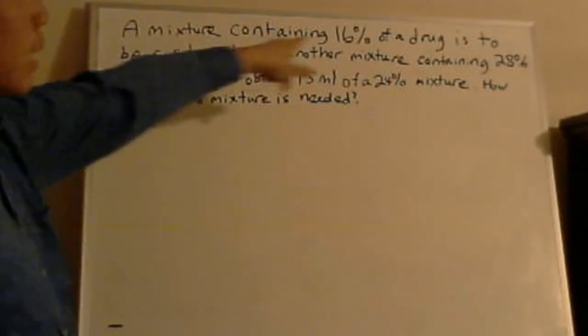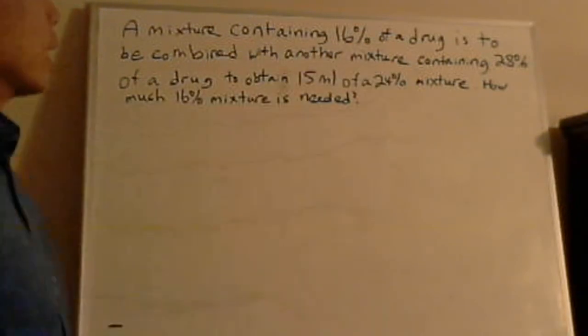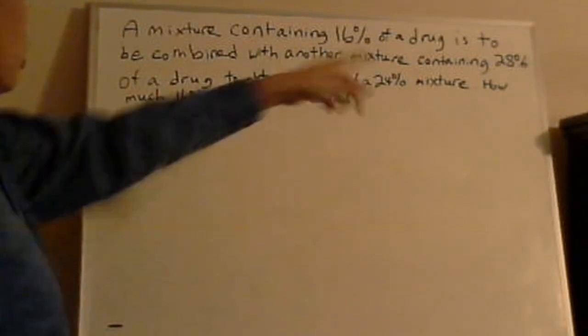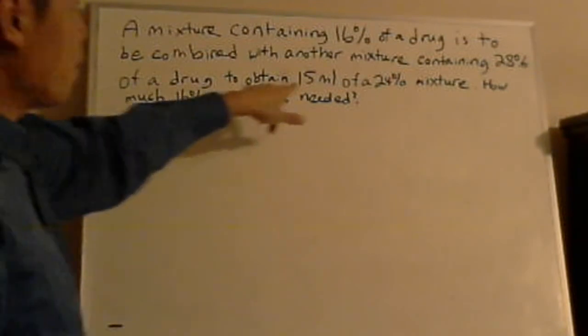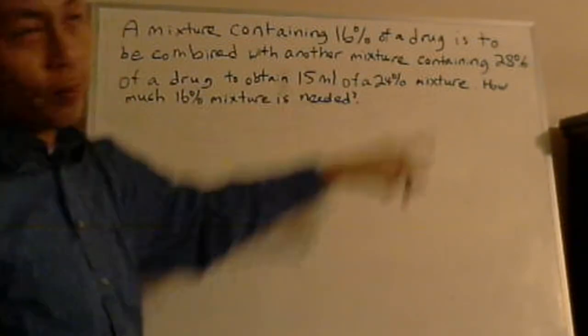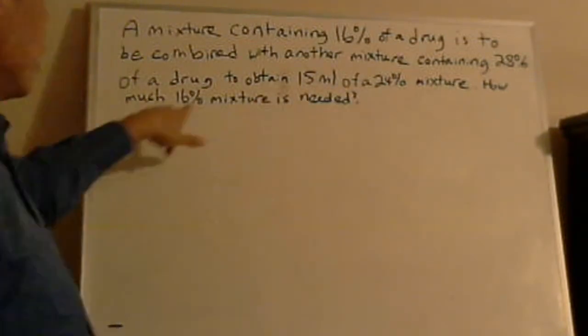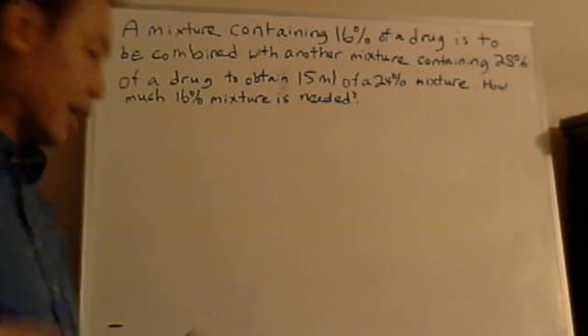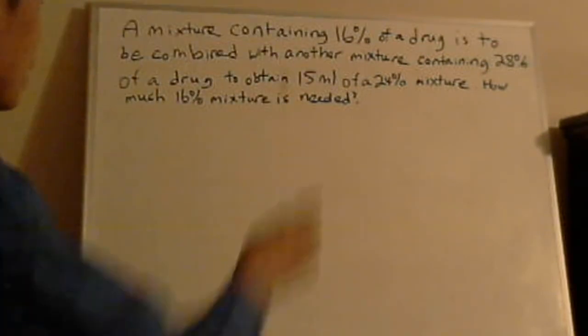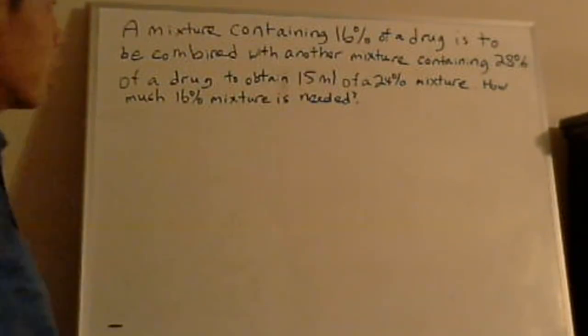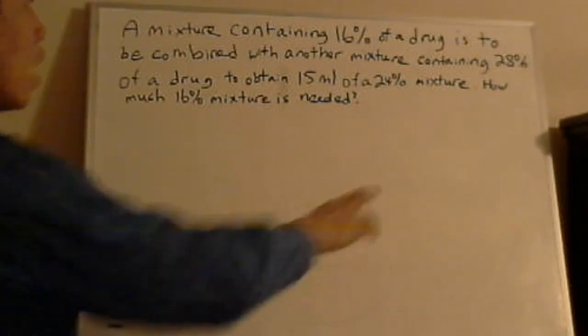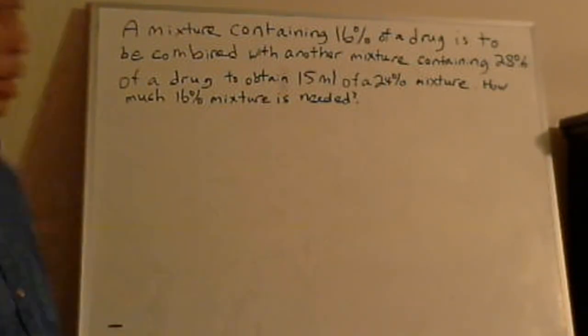So, a mixture containing 16% of a drug is to be combined with another mixture containing 28% of a drug to obtain 15 milliliters of a 24% mixture. How much 16% mixture is needed? So first of all, you have to understand what the question is asking. There's a percent of a drug that it's mixing. So you're mixing a 16% of a drug, and then there's a 28% of a drug, and then somehow it becomes a 24% of a drug—a certain mixture of a liquid or a drug in its contents.